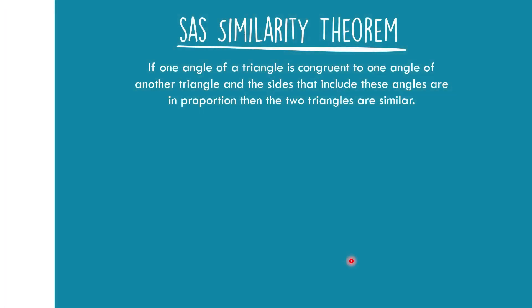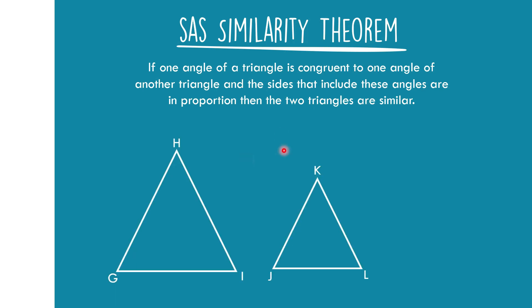Now let's move on with SAS Similarity, or simply Side Angle Side Similarity. This states that if one angle of a triangle is congruent to one angle of another triangle, and the sides that include these angles are in proportion, then the two triangles are similar. Let us have a figure to prove SAS Similarity.